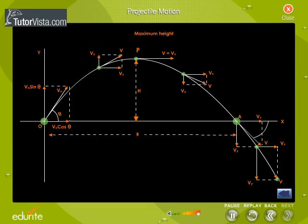Maximum height. Maximum height is the maximum value of the vertical distance attained by a projectile above the horizontal plane to the point of projection. In the figure, P is the point of maximum height. H is equal to V0 square sin square θ by 2g.